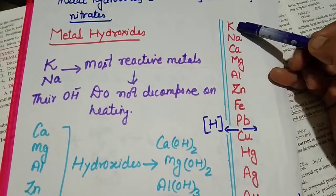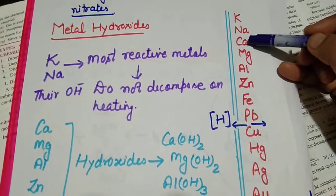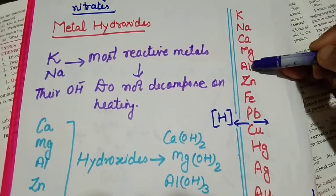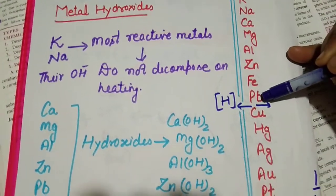At the top of this series is potassium, then sodium, and both are very reactive. Then less reactive are calcium, magnesium, aluminium, zinc, iron, lead. As we go down, reactivity decreases.